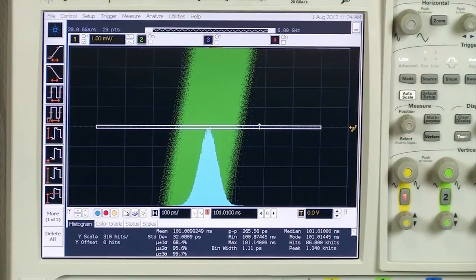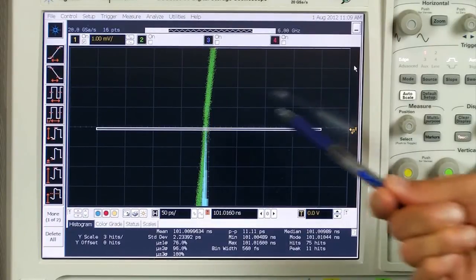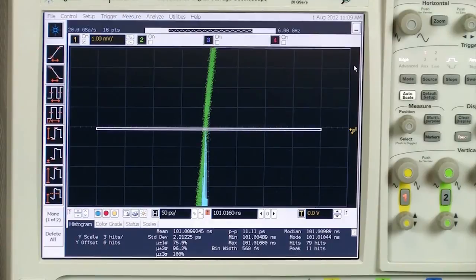Now let's take a look at the True Form. So now we're looking at the True Form signal, same scope settings, and we can see that there's drastically less variation on the True Form edge.